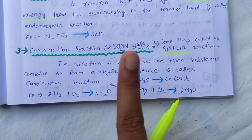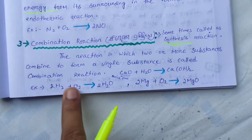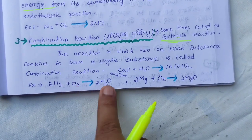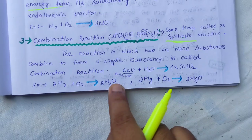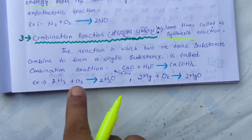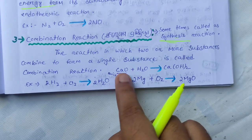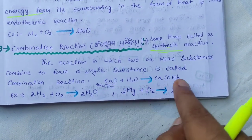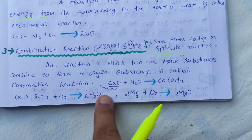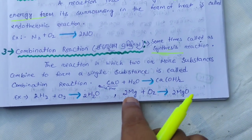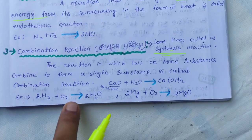Examples of combination reactions: 2H₂ + O₂ → 2H₂O. Also: CaO + H₂O → Ca(OH)₂. And: 2Mg + O₂ → 2MgO.